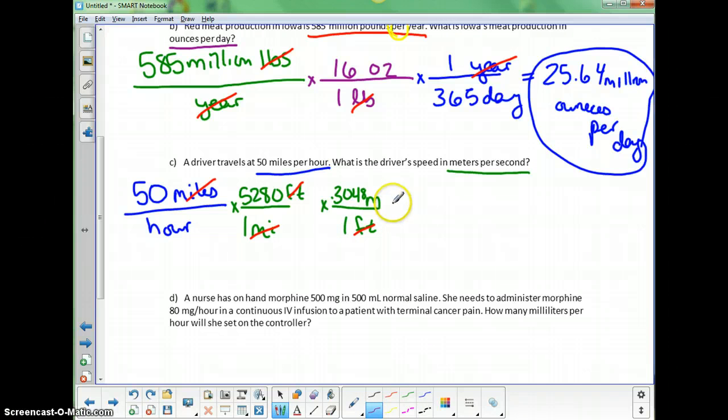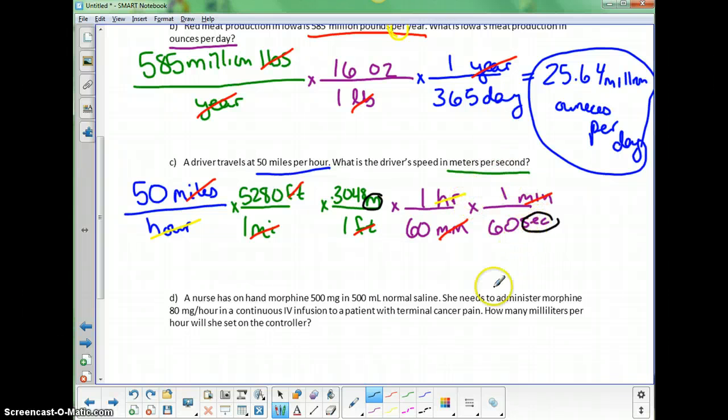Let's work on the other part we needed to change. Hours need to be changed to seconds. I know that there are 60 minutes in an hour. Hours on the bottom here, so I need to go on the top over here. So one hour is 60 minutes. And that's going to make hours cancel. I don't want to be in minutes, so I'm going to use one more fact to go from minutes to seconds. I know that one minute is 60 seconds. And that'll have minutes and minutes canceling. My final units should be meters per second.